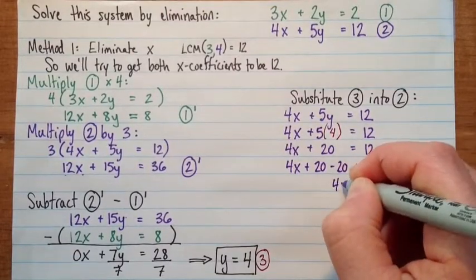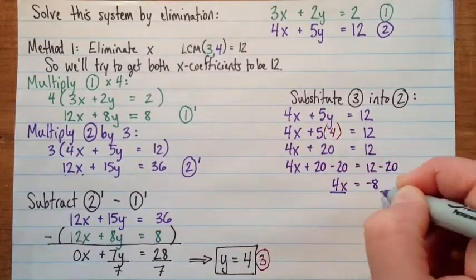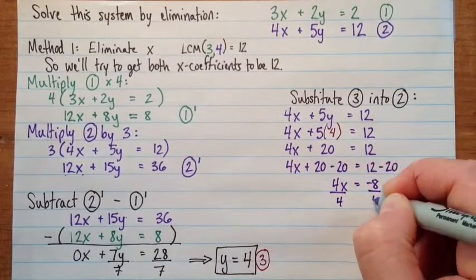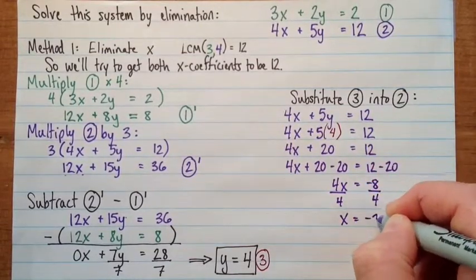And then I'll subtract 20 from both sides. So we have 4x equals negative 8. Then divide both sides by 4. And we get x equals negative 2.